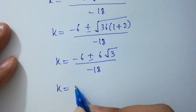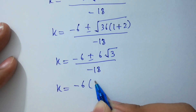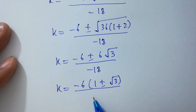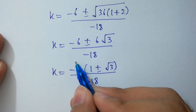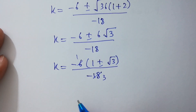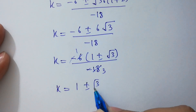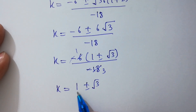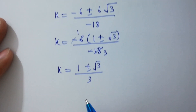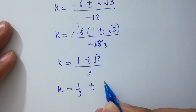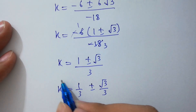We can simplify here. Minus 6 times 1 plus or minus square root 2, over minus 18. The minus and minus will be cancelled. 6 times 1 is 6, 6 times 3 is 18. We get k equals 1 plus or minus square root 2, over 3. Which can also be written as k equals 1 over 3 plus or minus square root 2 over 3.